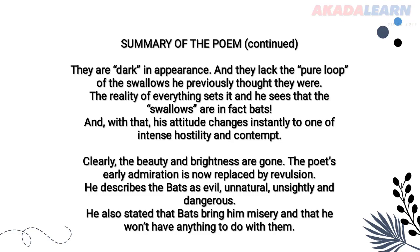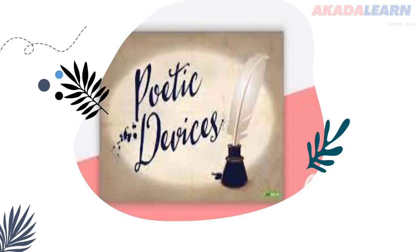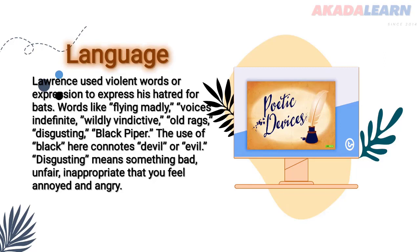We're moving to the poetic devices. The first is language. Lawrence uses violent words or expressions to express his hatred for bats, making sure listeners knew the extent of his hatred. Words like 'flying madly,' 'voices indefinite,' 'wildly vindictive,' 'old rags,' 'disgusting,' 'black' — these are negative, strong, violent words used to describe bats. The use of 'black' also connotes the devil or evil. 'Disgusting' means something bad, inappropriate, that makes you feel really annoyed and angry.